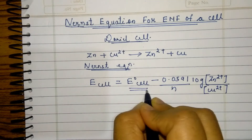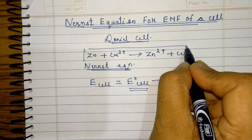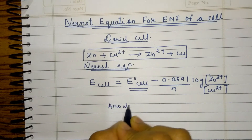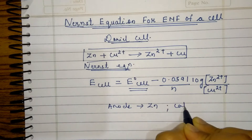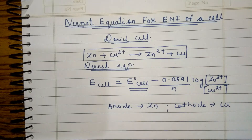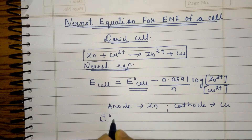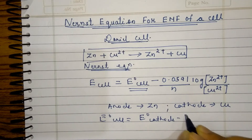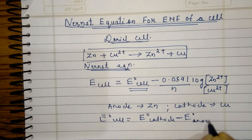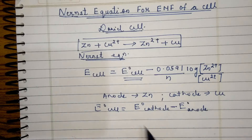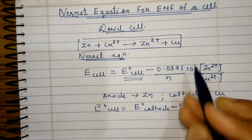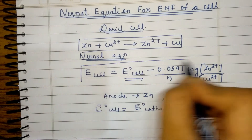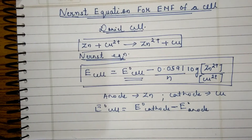What is E⁰cell? From the reaction, the one which undergoes oxidation is the anode, which is zinc, and the cathode in the Daniel cell consists of the copper electrode. So E⁰cell = E⁰cathode minus E⁰anode (standard reduction potential). That is E⁰copper minus E⁰zinc. On substituting, we get the Nernst equation for the Daniel cell.